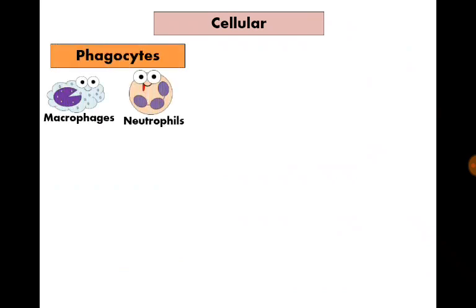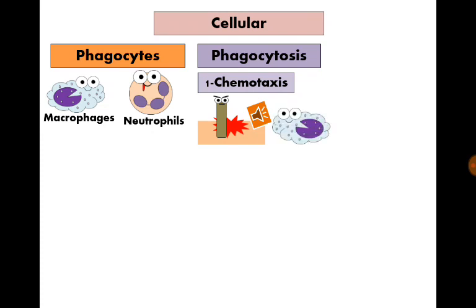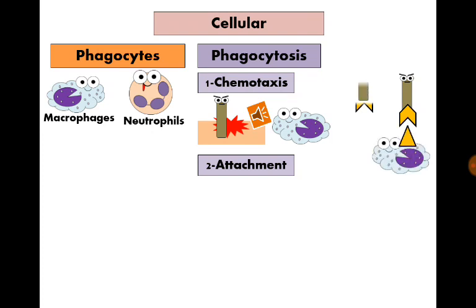Now let's talk about the cells responsible for innate immunity. The most important are phagocytes — the macrophages and the neutrophil, sometimes called the microphage. The process of phagocytosis, or eating organisms, consists of four stages. The first stage is chemotaxis: the presence of bacteria at any site triggers the production of chemotactic factors that recruit phagocytes to the site.